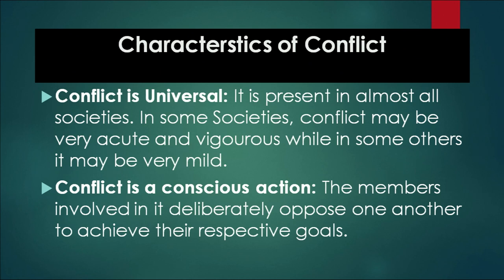Conflict is a conscious action. Members deliberately approach one another for achieving their respective goals. For example, in a playground, two groups playing with each other consciously pursue their own goals. We can also take the example of two clubs in a village — if they perform better and do activities properly, they will get appreciation. So sometimes they approach one another to achieve their respective goals.